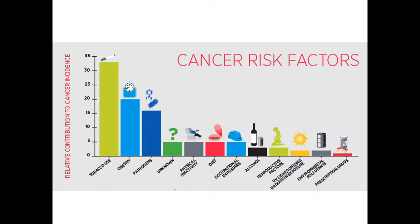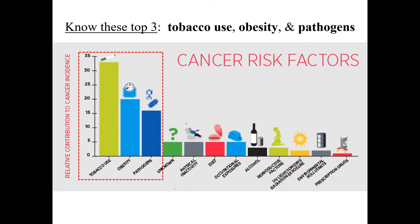The three most common contributors to developing cancer are tobacco use first, then obesity, and third, certain pathogens. For example, HPV — human papillomavirus, a sexually transmitted infection — is associated with cervical cancer. It's recommended that women get an HPV vaccine when they first become sexually active or at age 18, whichever comes first, to reduce the chance of developing cervical cancer due to HPV infection.